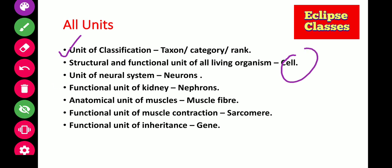Unit of neural system — unit of nervous system — what is the unit? Neurons. Functional unit of kidney: when we have the excretory system and we have the kidney, what is the functional unit of kidney? Nephrons.